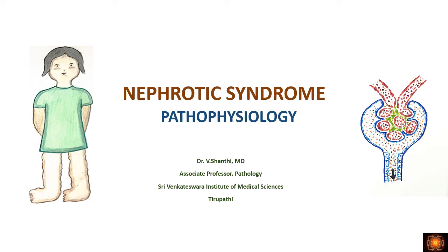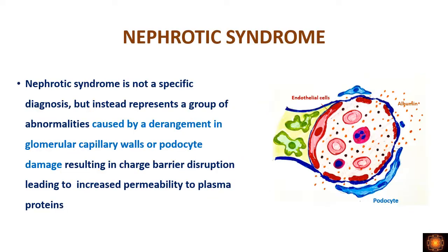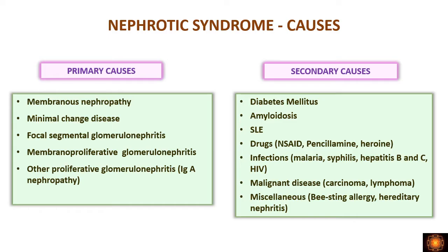Hello everyone, welcome to Pathology Insights. In this video I'll be discussing the pathophysiology of nephrotic syndrome. Nephrotic syndrome is not a single disease entity but represents a group of disorders where we have a derangement in the glomerular capillary walls or podocyte damage. This damage leads to charge barrier disruption, which leads to increased permeability of plasma proteins — a large amount of plasma proteins are lost.